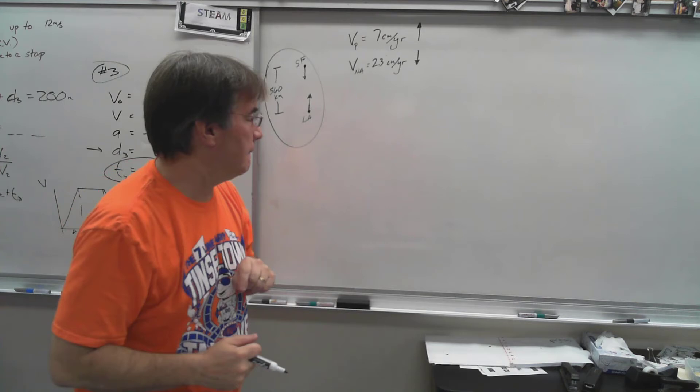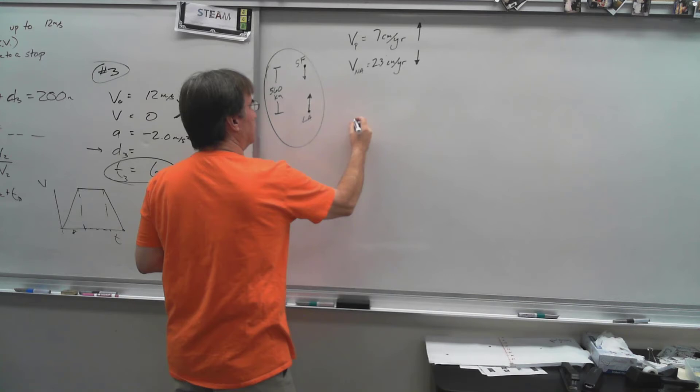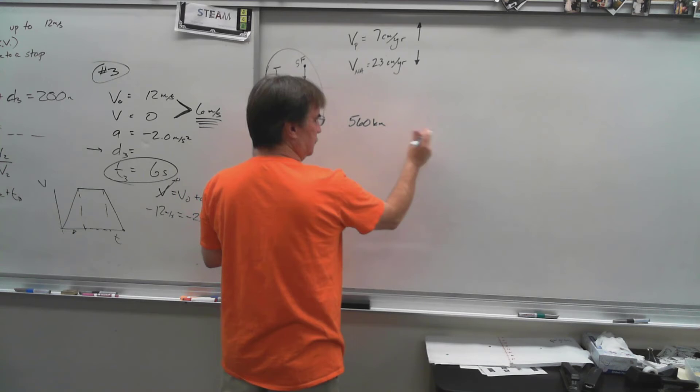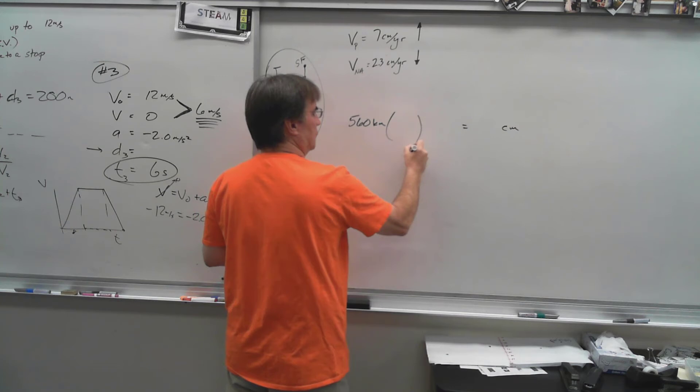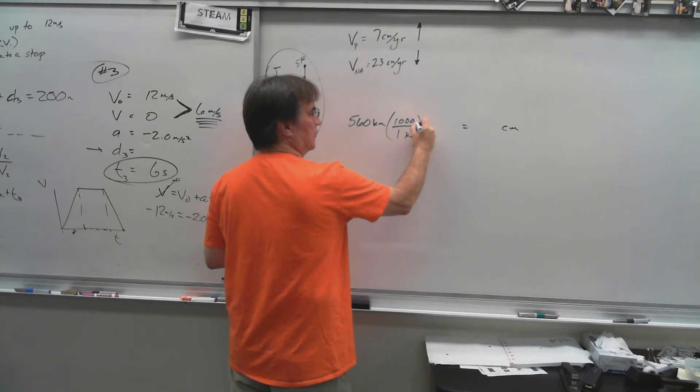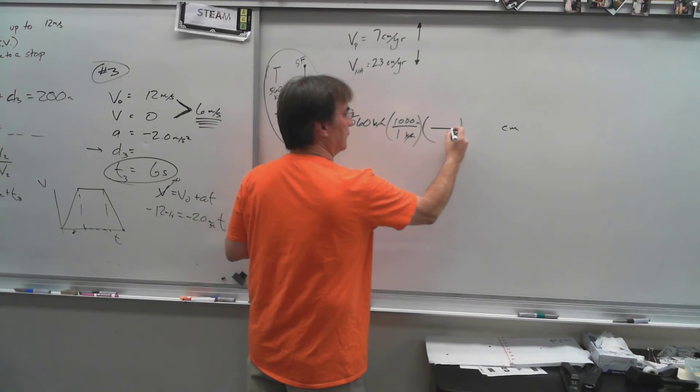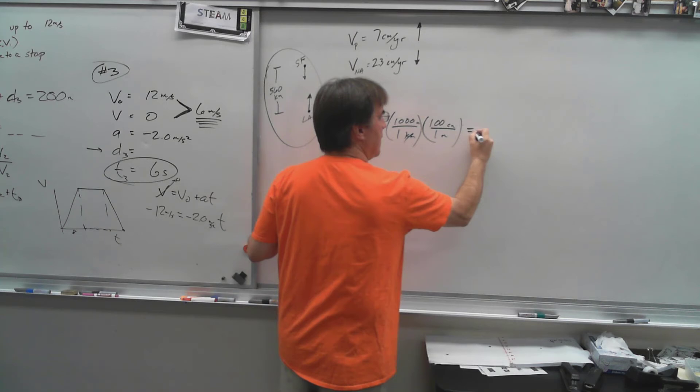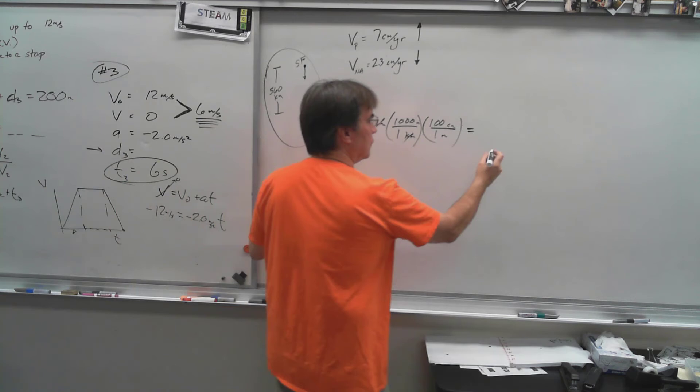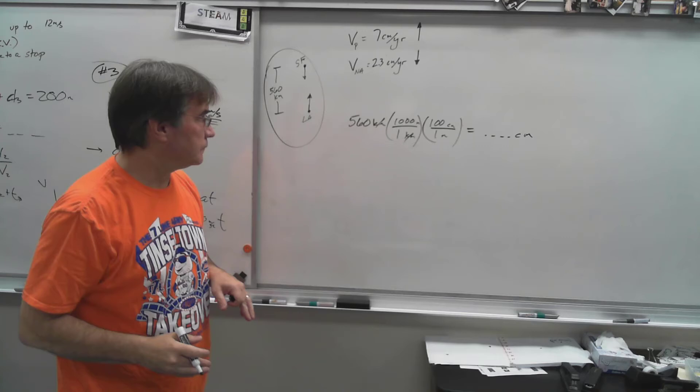We do have a unit issue here. This is in kilometers, so I'm going to show two different ways to convert this to centimeters. One is just using prefixes this way. Say okay, one kilometer is a thousand meters or ten to the third meters, and then we've got to get it to centimeters. One meter is a hundred centimeters, and you can then multiply those and get how many centimeters away San Francisco and LA are.